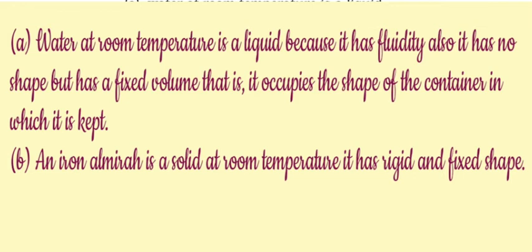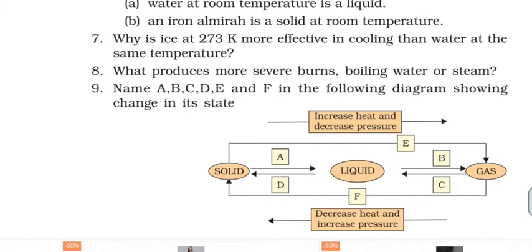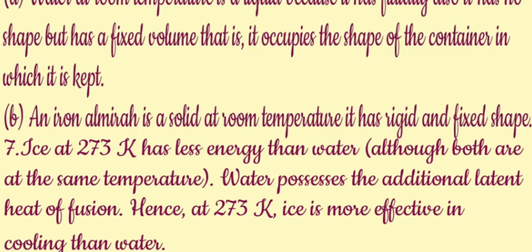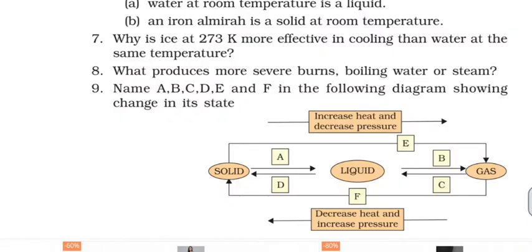Why is ice at 273K more effective in cooling than water at the same temperature? Because ice at 273K has less energy than water at the same temperature. This is due to the latent heat of fusion — the water possesses additional latent heat of fusion. Hence, at 273K, ice is more effective in cooling than water.